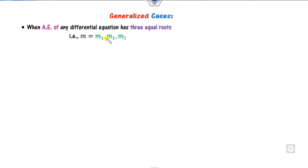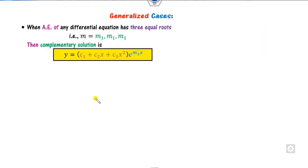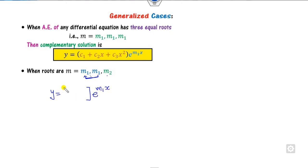Now let us generalize these cases. If the auxiliary equation has three equal roots m1, m1, m1 (third-order ODE), the solution is y = (c1 + c2·x + c3·x²)·e^(m1·x). If the roots are two equal roots m1, m1 and one different root m2, the solution is y = (c1 + c2·x)·e^(m1·x) + c3·e^(m2·x).